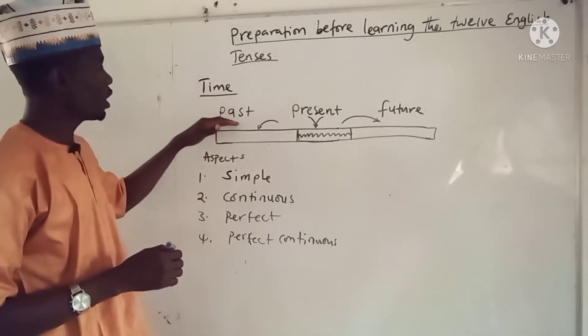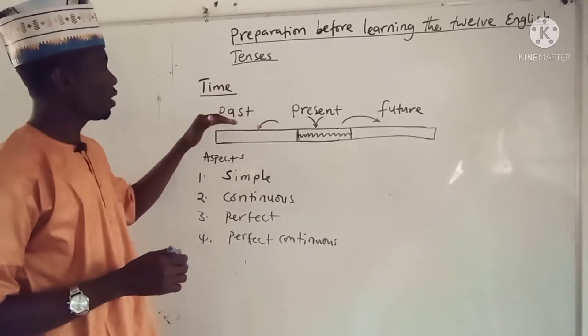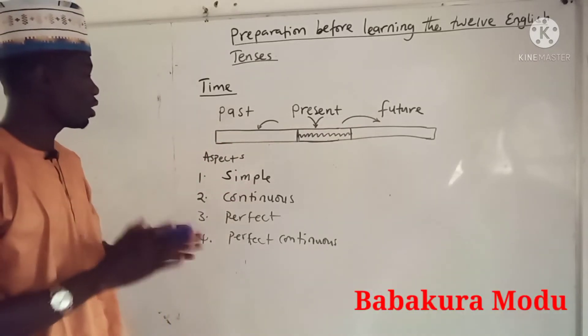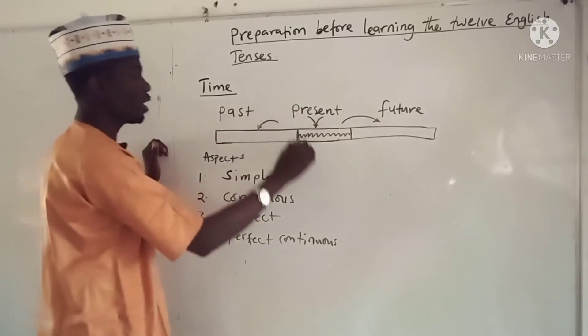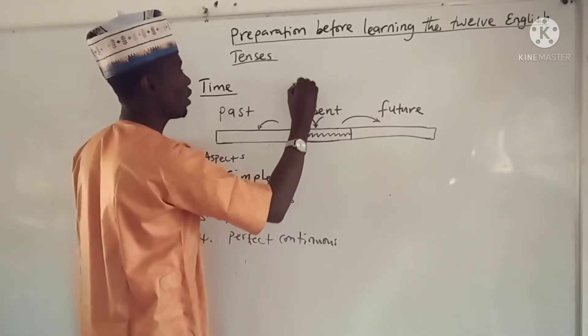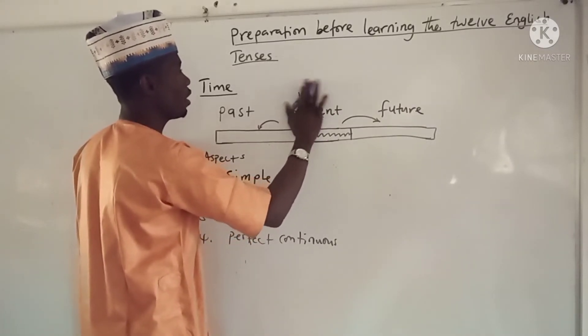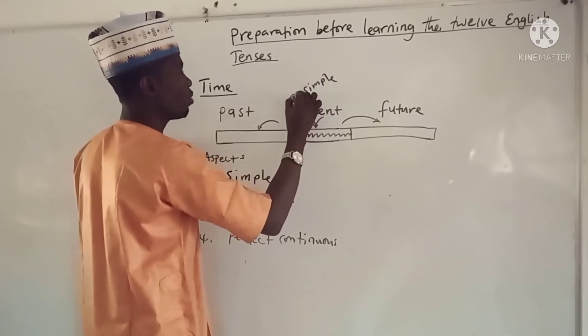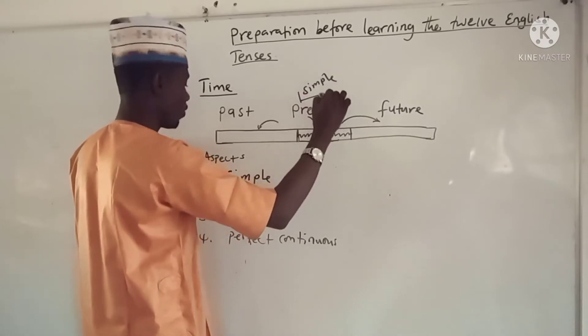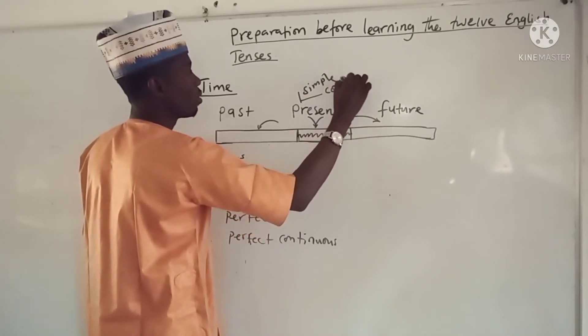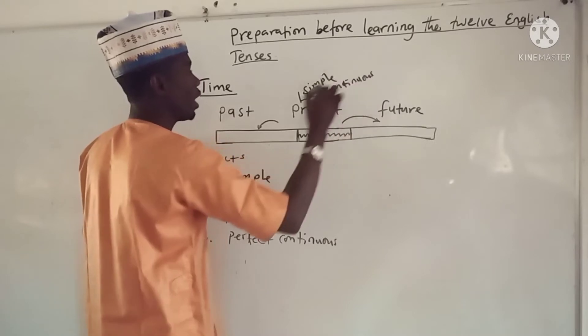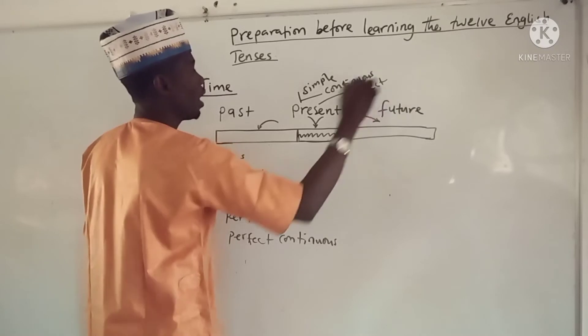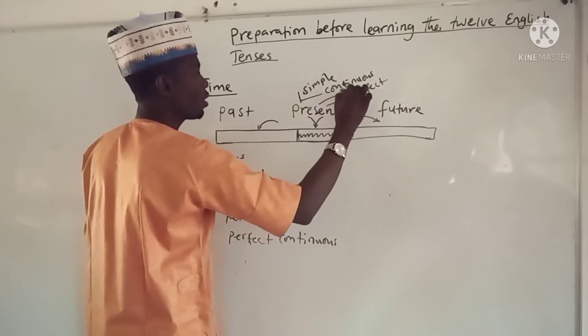So we have the time which is the present time, the past time, and the future time. So if you are now talking about the twelve tenses in English language, first you have to talk about the present. We have the first one which is the present simple. We have the second one which is the present continuous. And then we have the present perfect continuous.